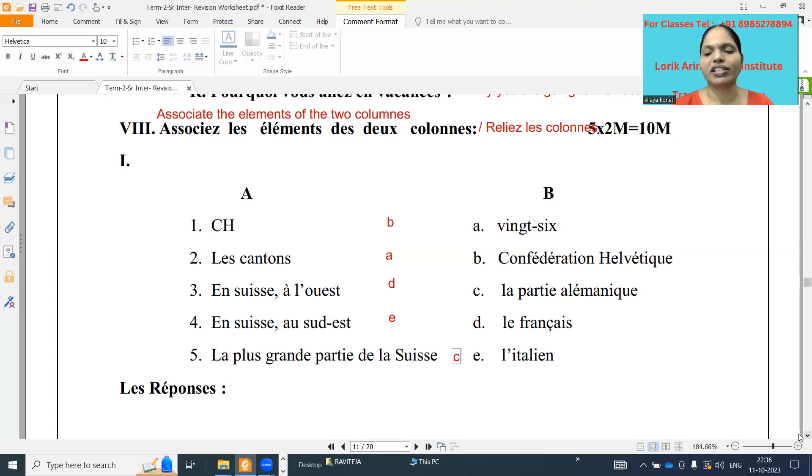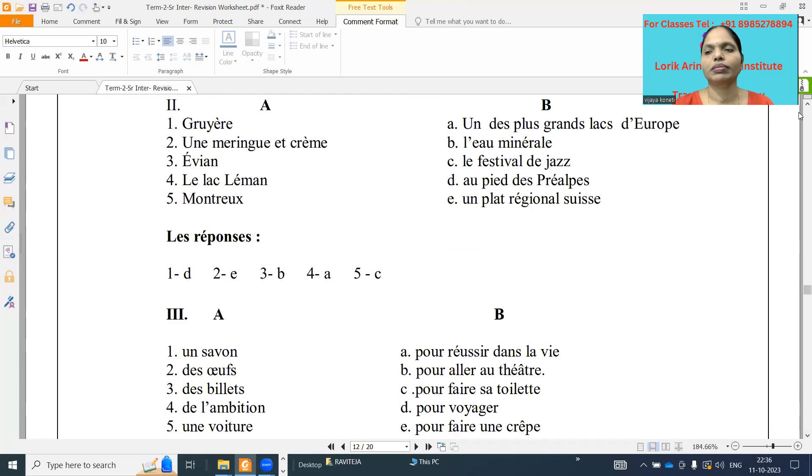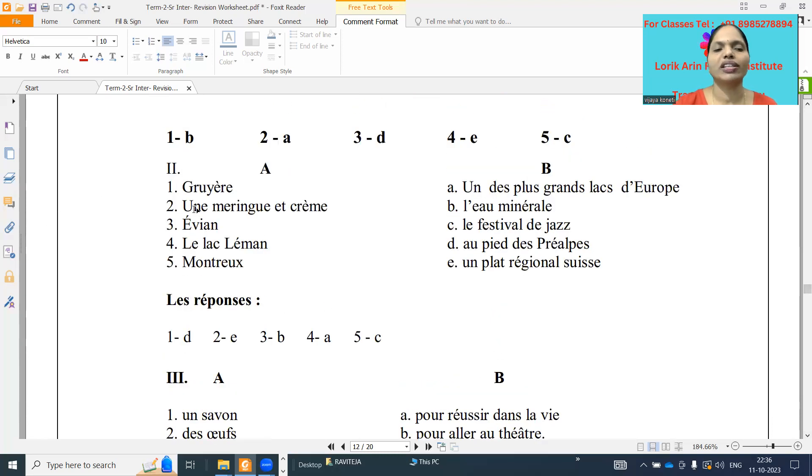And next one, we will see the second one. So Gruyère. Gruyère is located au pied de Préalpes. So Gruyère is the city located at the foot of the Préalpes. And next one, 'une meringue crème.' So meringue crème, it is food actually, a plat régional Suisse. It's a Swiss regional dish.